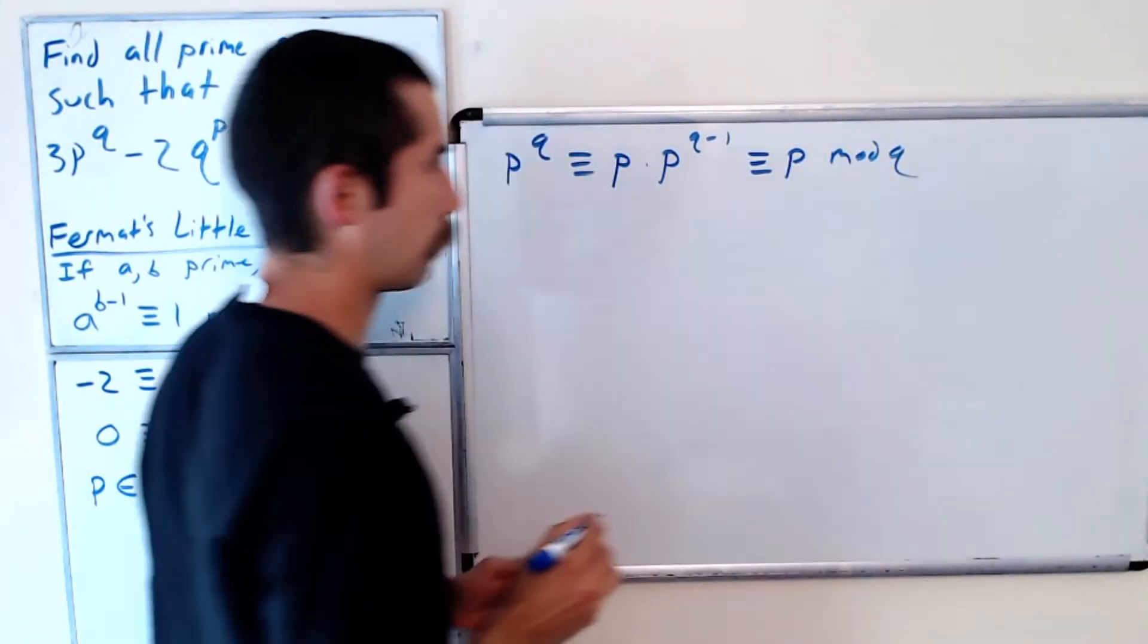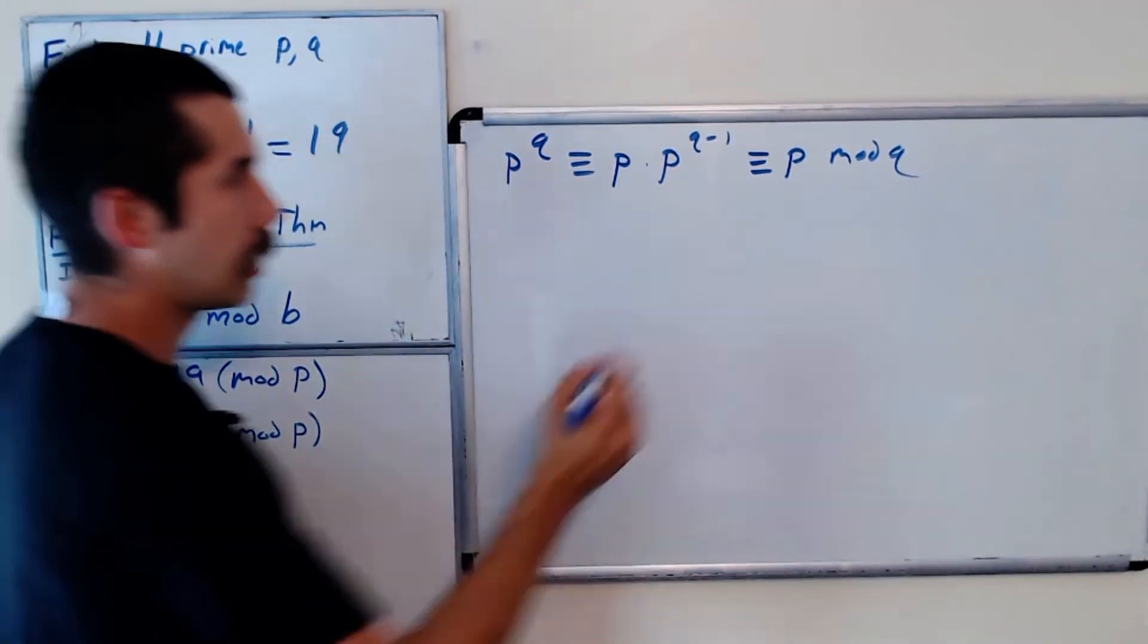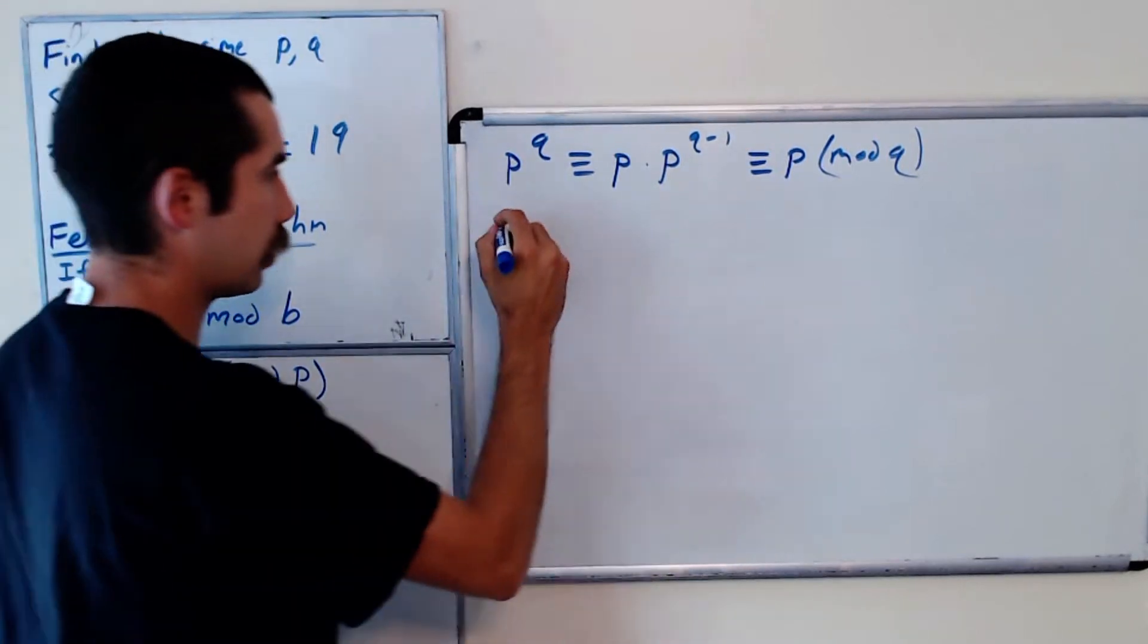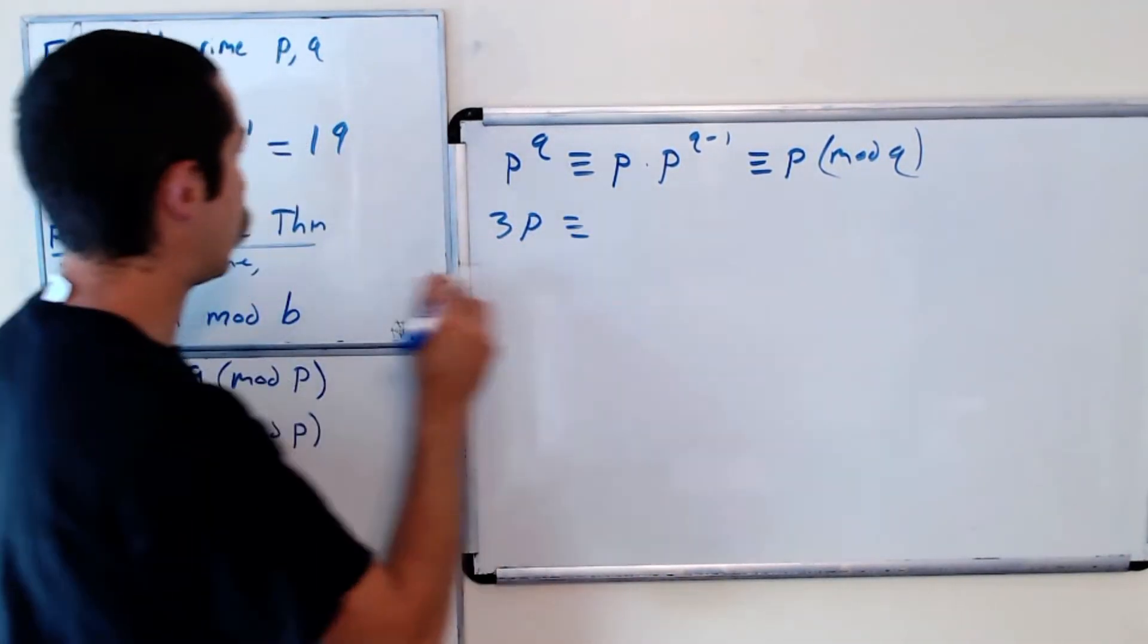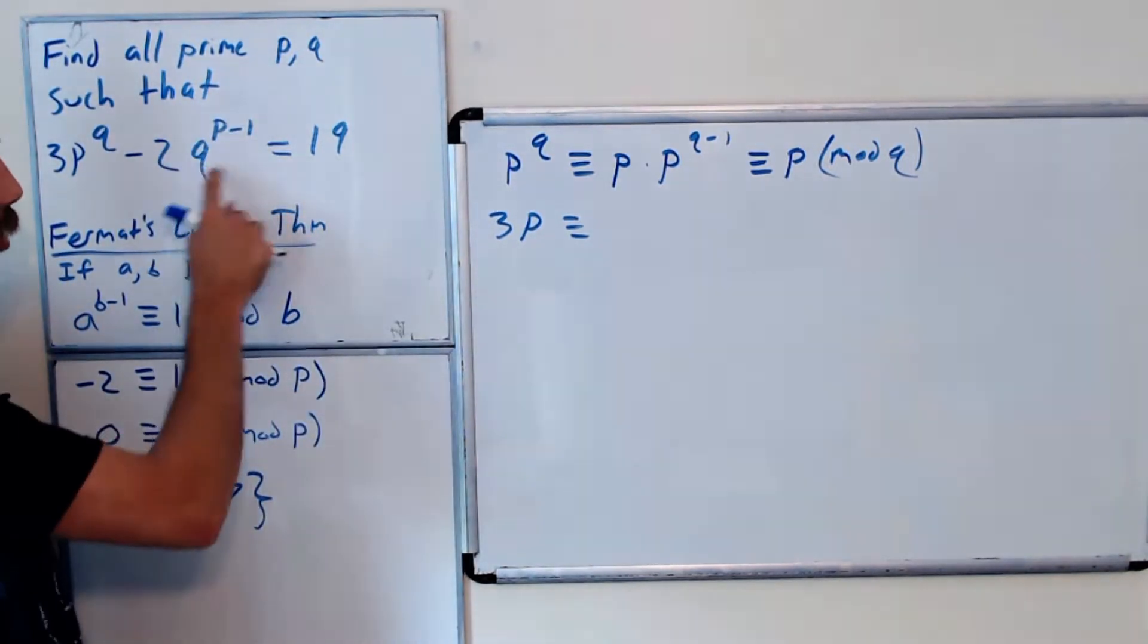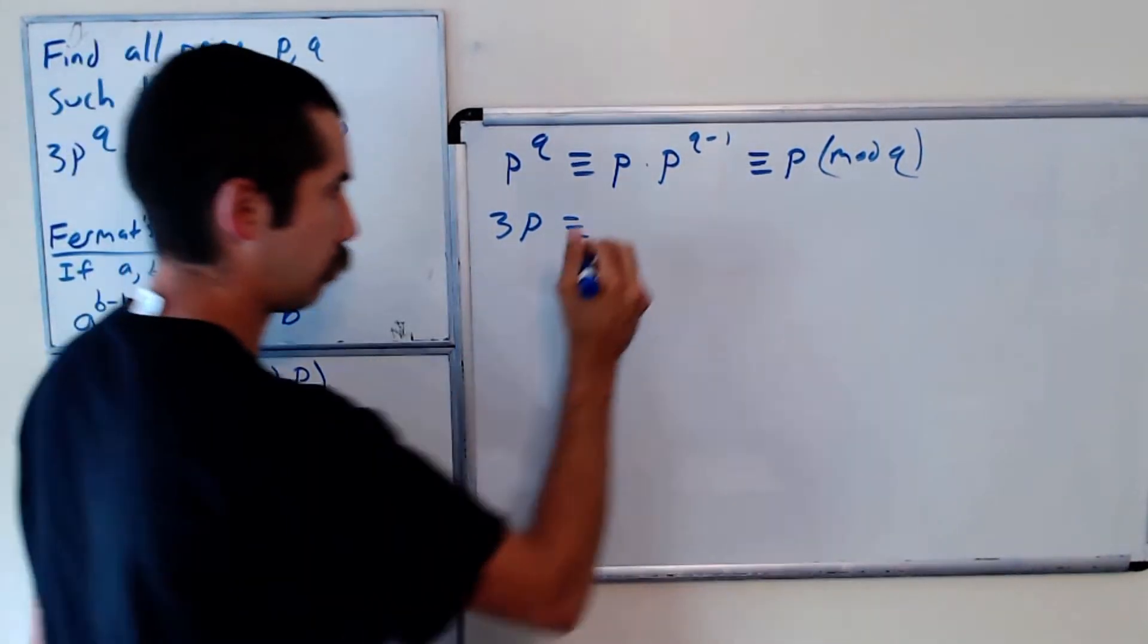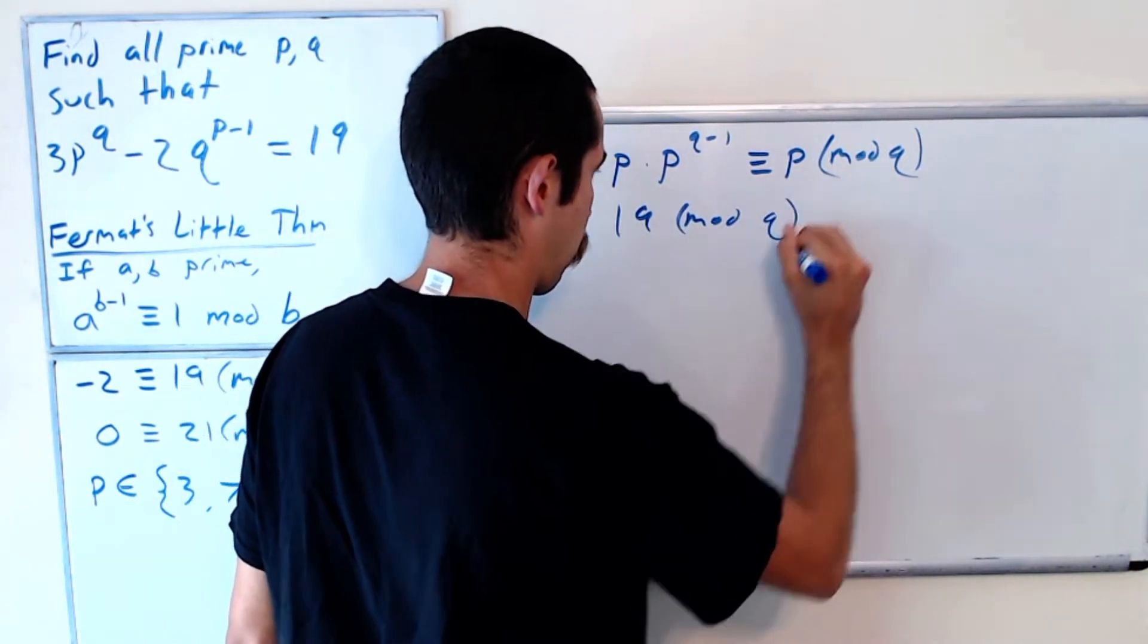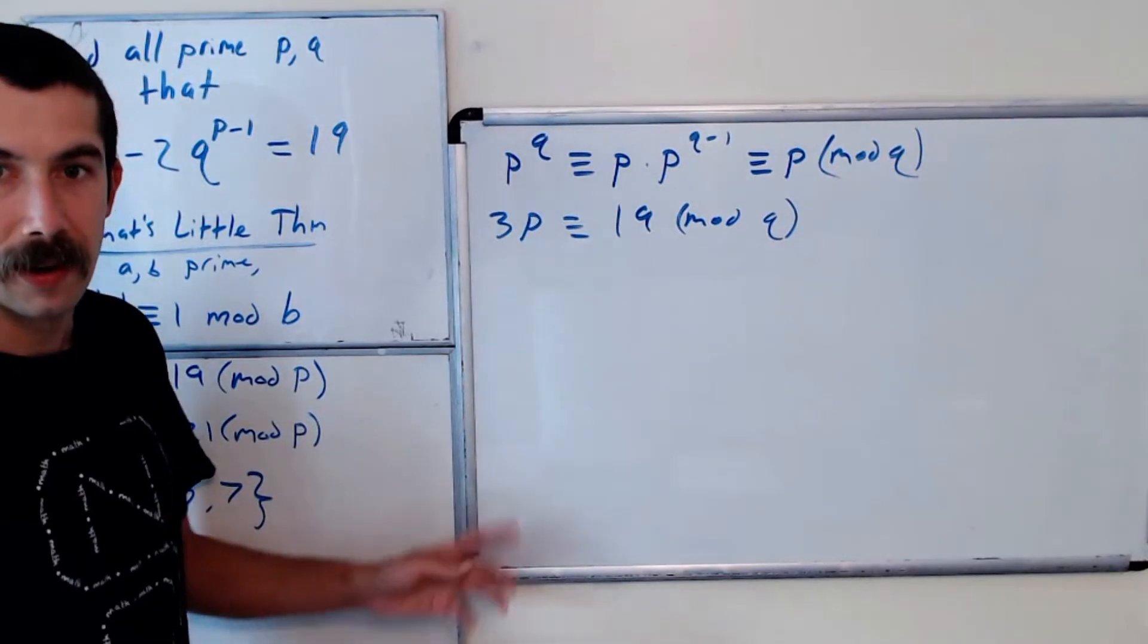And so what do we have? We have 3p is equal to 19 mod q, right? This term is going to go to 0 mod q.